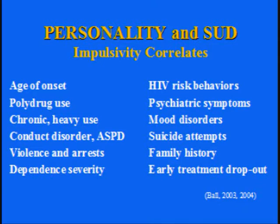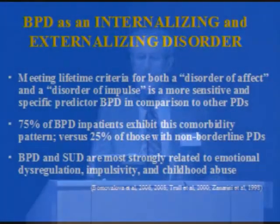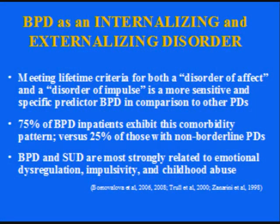Increasingly, borderline personality disorder is being thought of as one of the disorders that sits on the edge between the internalizing disorders — mood and anxiety — and the externalizing disorders — substance abuse and antisocial personality disorder. BPD is one of the few disorders that predicts having comorbidity in both of those domains. So, 75% of borderline personality disorder patients exhibit this essentially triple comorbidity of BPD plus an internalizing disorder plus an externalizing disorder, whereas when you look at patients without BPD, only about 25% have this triple problem.